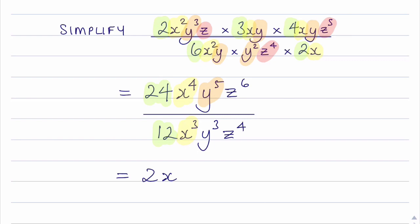I then have y to the power 5 divided by y to the power of 3, and that will be y squared. And finally I have z to the power of 6 divided by z to the power of 4, which is z squared.